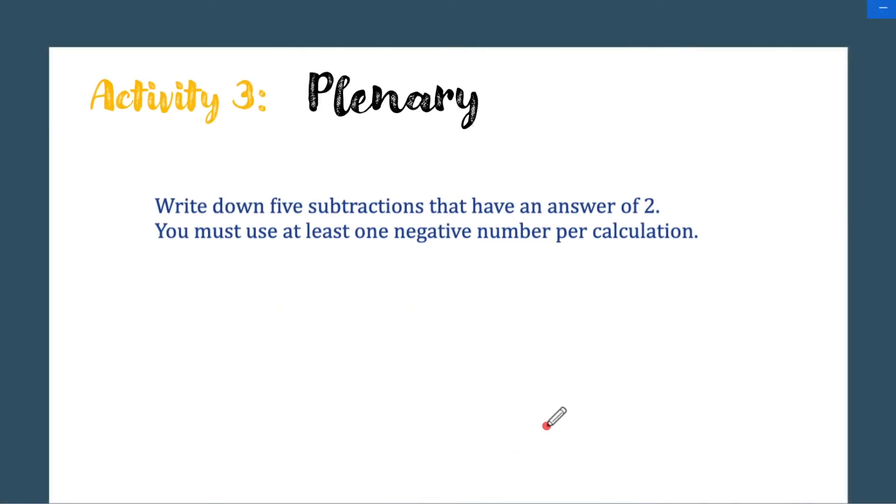Write down five subtractions that have an answer of 2. You must use at least one negative number per calculation. So what I want to see here is, for example, -5. If you have -5 units, how many do you need to have to end up with 2 positives? Well, obviously you need the 5 positive units to cancel this out, and then you need an extra 2 positive units. So you need 5 positives with another 2 positives. So you need 7 positive units to give you a 2. I'm only showing you this because basically you can write an infinity of equations. If you write all of these operations, there is no answer for this activity because you can write an infinite number.